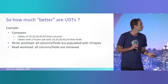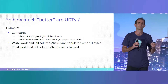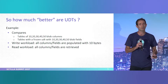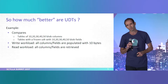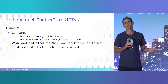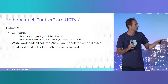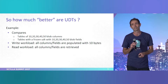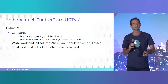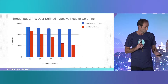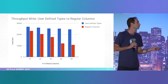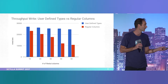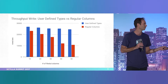How much better are UDTs when it comes to performance? I'm going to show a simple example where we took 10 columns versus a UDT with 10 fields. In all cases, we're writing and reading all of them. The graph shows that when using 10 columns versus 10 UDT fields, writing everything, the performance is very similar.